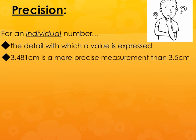For example, 3.481 centimeters is a more precise measurement than 3.5 centimeters simply because it goes out more decimal places. It's not just random — there has to be a difference in the scale on the instrument you're reading. So the 3.481 number was read from a more precise instrument than the 3.5 centimeter number.